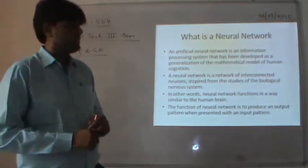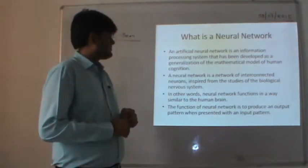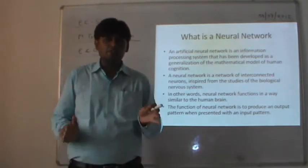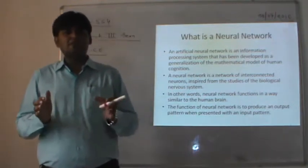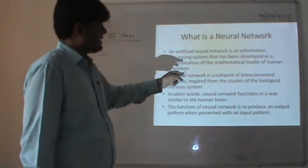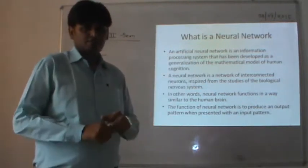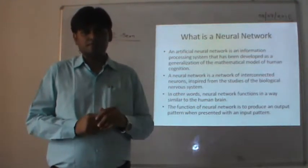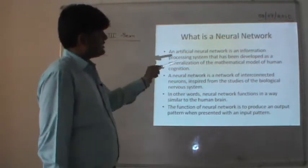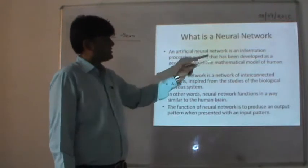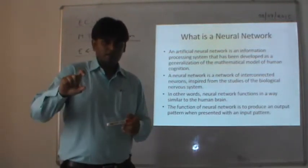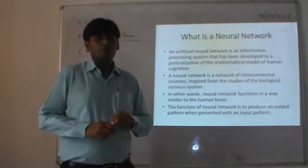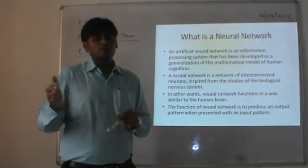Let us start with what is a neural network. An artificial neural network is nothing but an information processing system that has been developed as a generalization of the mathematical model of human cognition. Cognition means the acquisition of knowledge through thoughts. So, an artificial neural network is developed to mimic the working and functionality of the human brain, or for the generalization of the mathematical model of human cognition or the knowledge faculty.